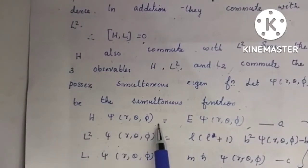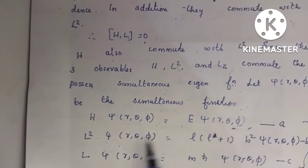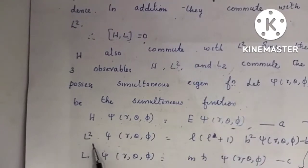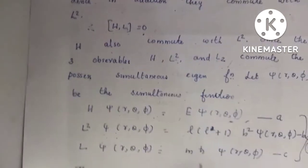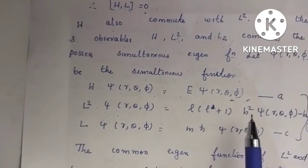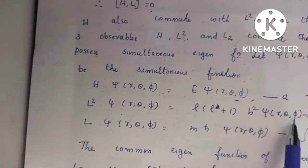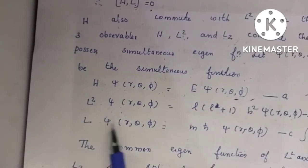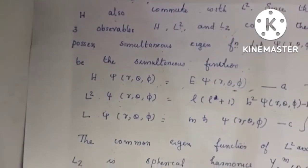H into psi of r theta phi equals E psi of r theta phi. Then L-squared into psi of r theta phi equals l(l+1) h-bar squared psi of r theta phi, and Lz psi of r theta phi equals m h-bar psi of r theta phi.